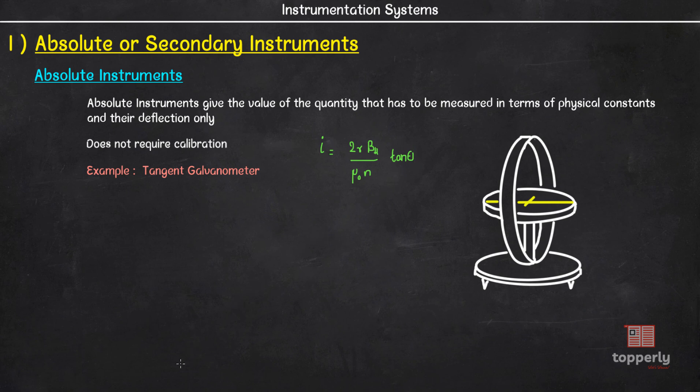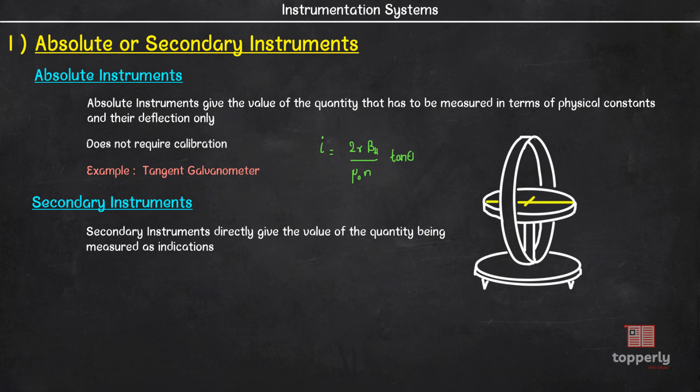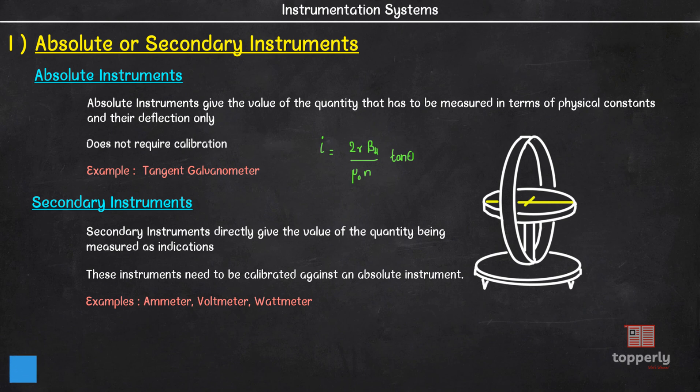Secondary instruments on the other hand are so constructed that the quantity can be measured by observing the output indicated by the instrument. These instruments need to be calibrated against an absolute instrument. Some examples of secondary instruments are ammeter, voltmeter, wattmeter.